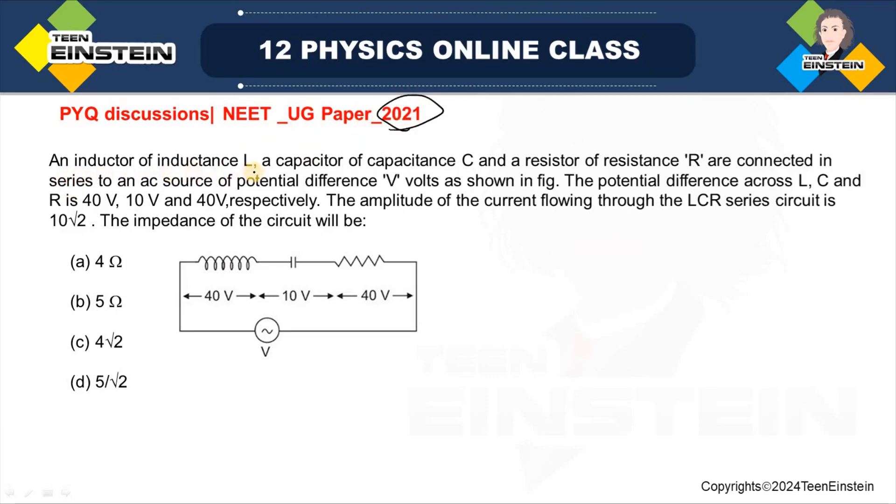The question says, an inductor of inductance L, a capacitor of capacitance C and a resistor of resistance R are connected in series to an AC source of potential difference V volts as shown in the figure. So, this is L, this is C and this is R. They are connected in series to this AC source of potential difference V.